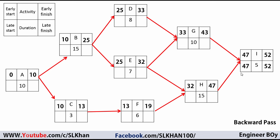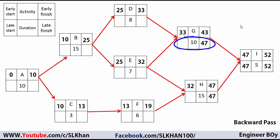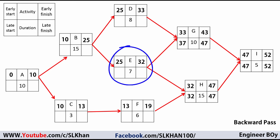Activities G and H receive their late finish from the late start of Activity I, which is 47 days. Subtracting durations: for G, 47 minus 10 gives a late start of 37 days; for H, 47 minus 15 gives a late start of 32 days.